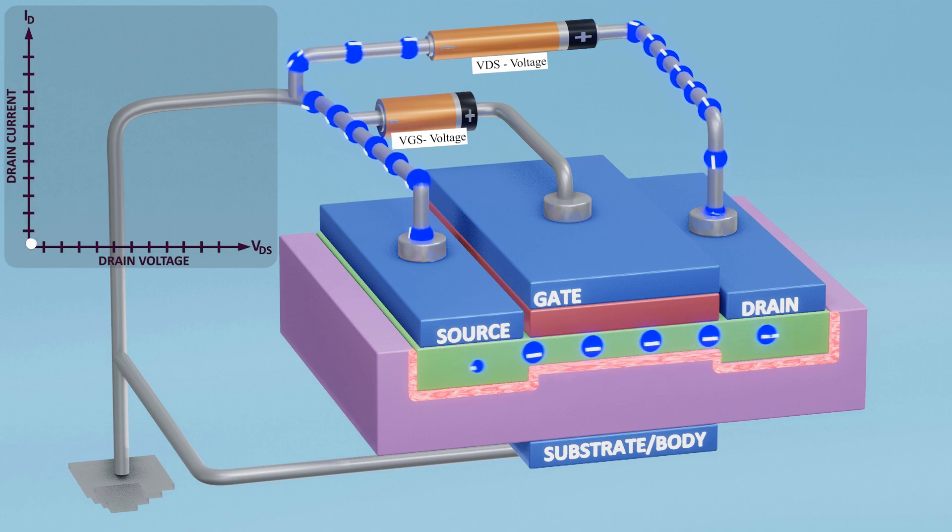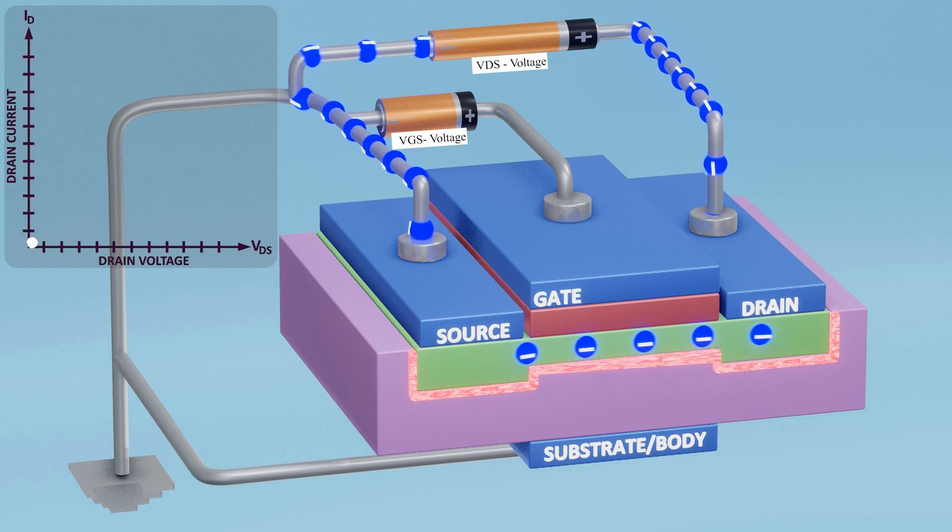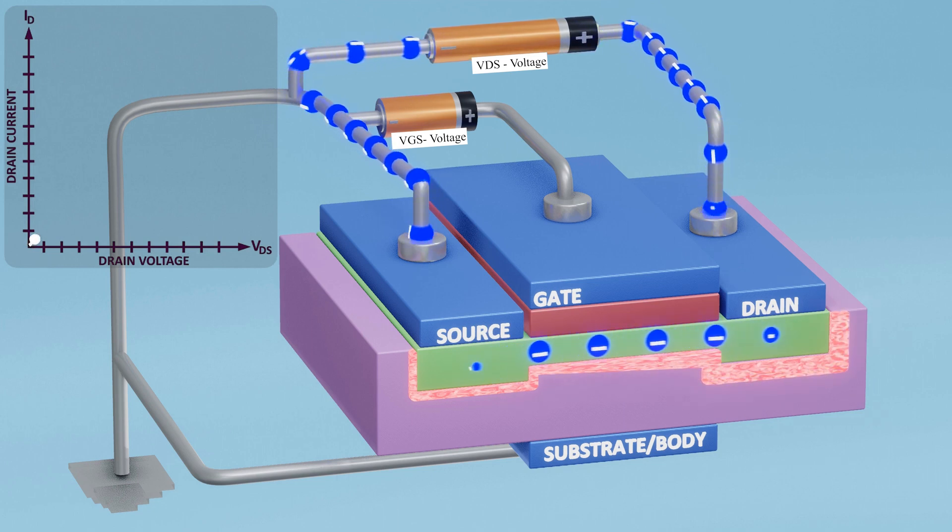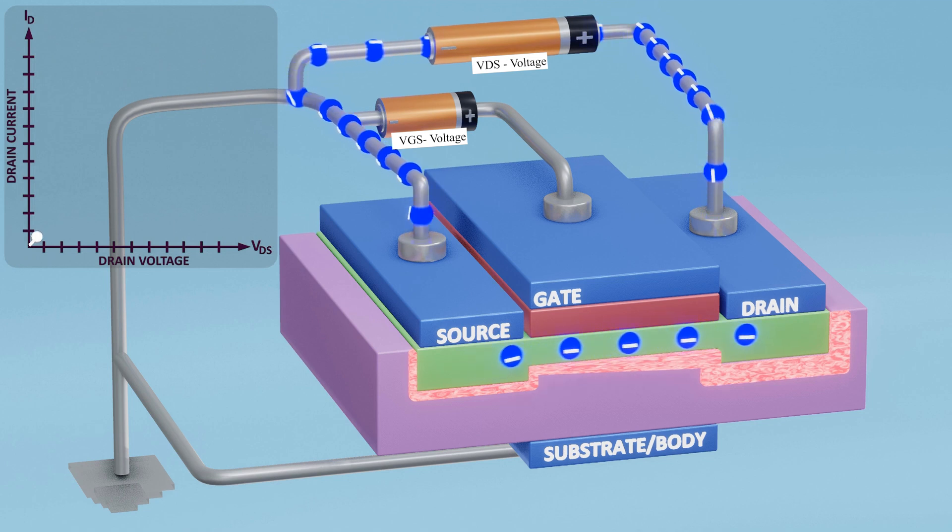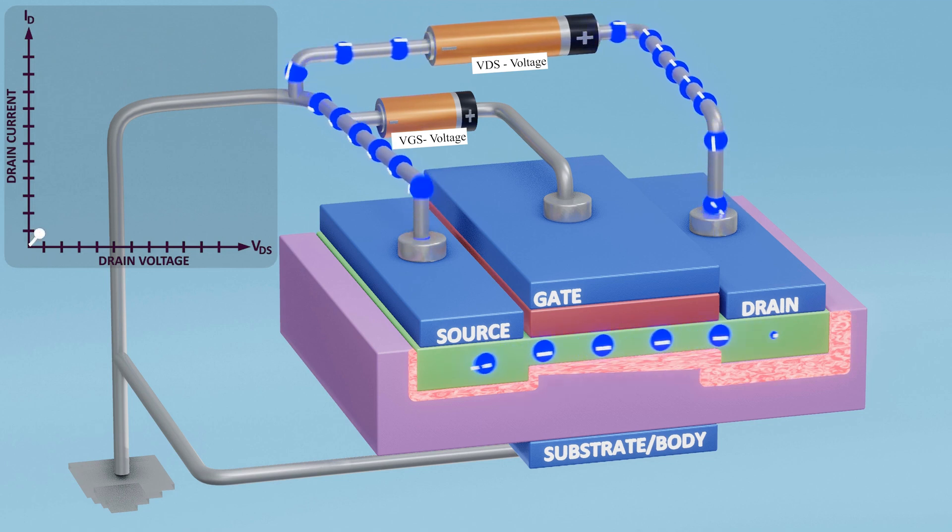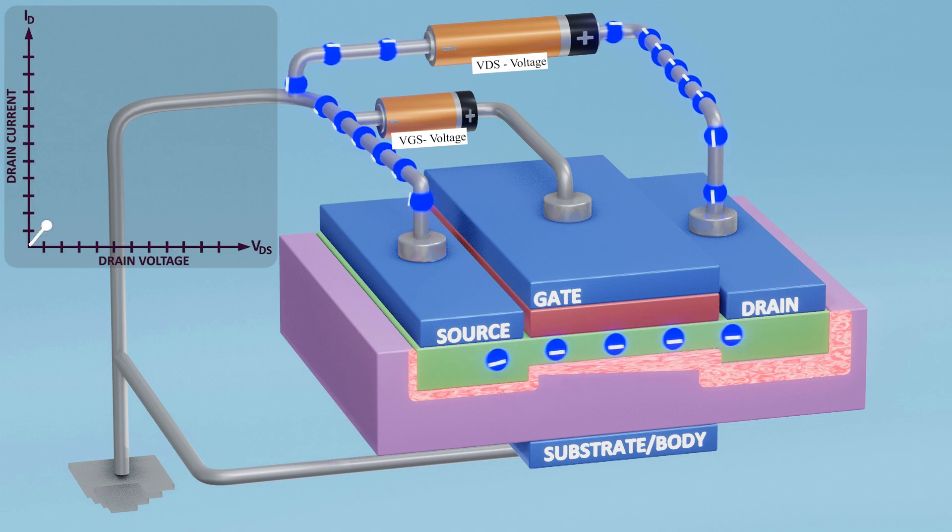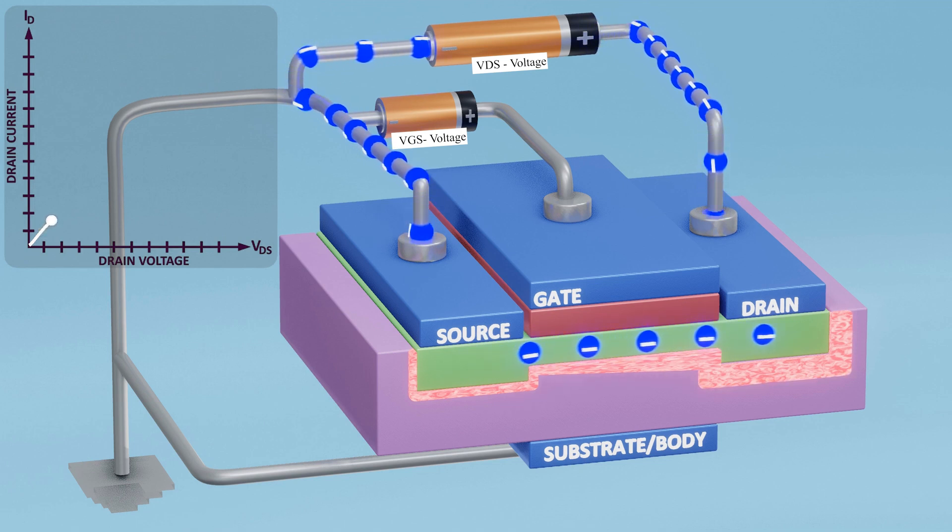As the drain voltage VDS is increased, the depletion region between the drain and substrate also increases, since they become reverse biased. The channel width starts to decrease toward the drain end, due to the negative charges being pulled into the drain, restricting the flow of charges and reducing the current flow.